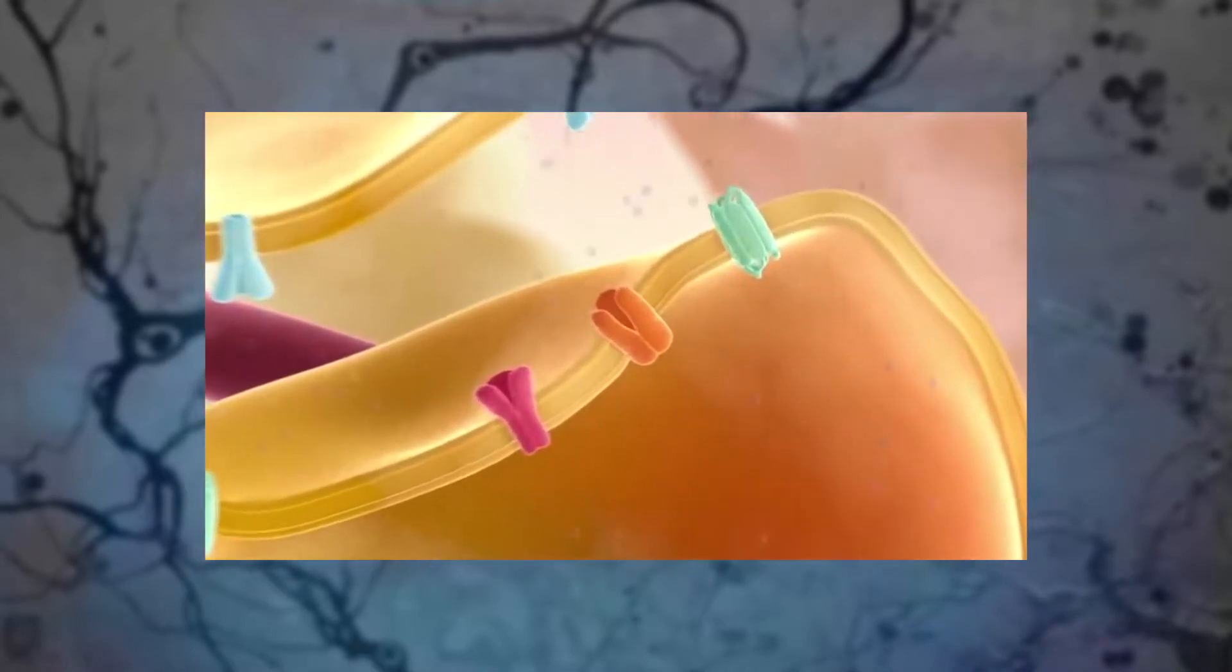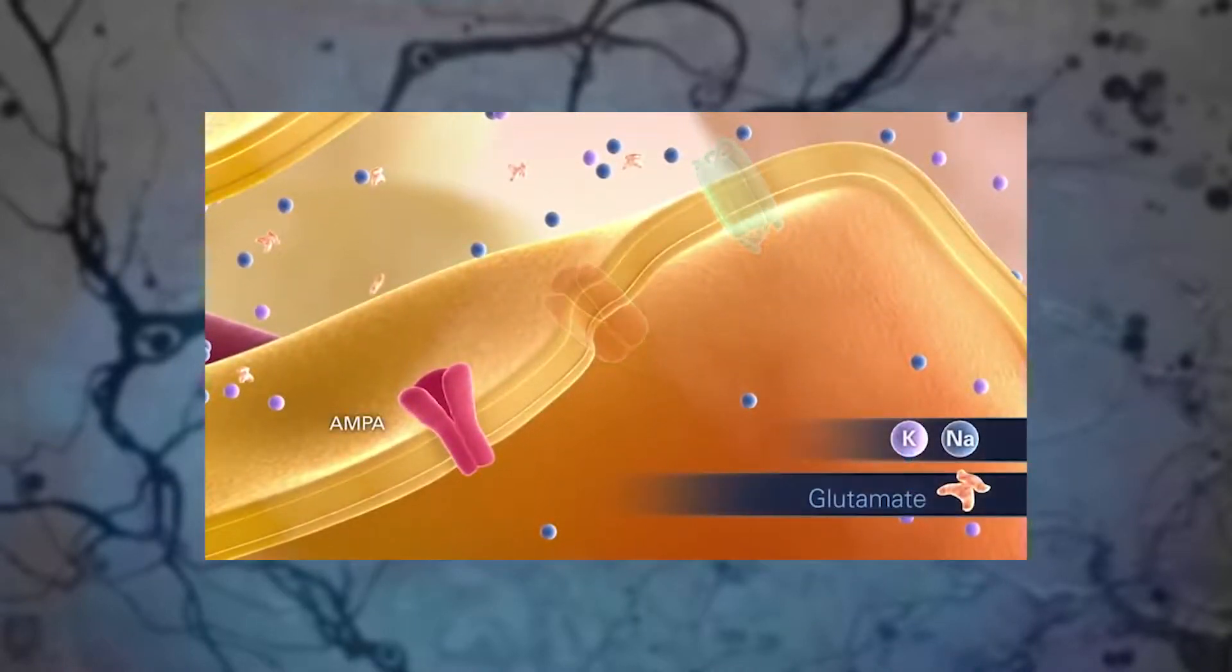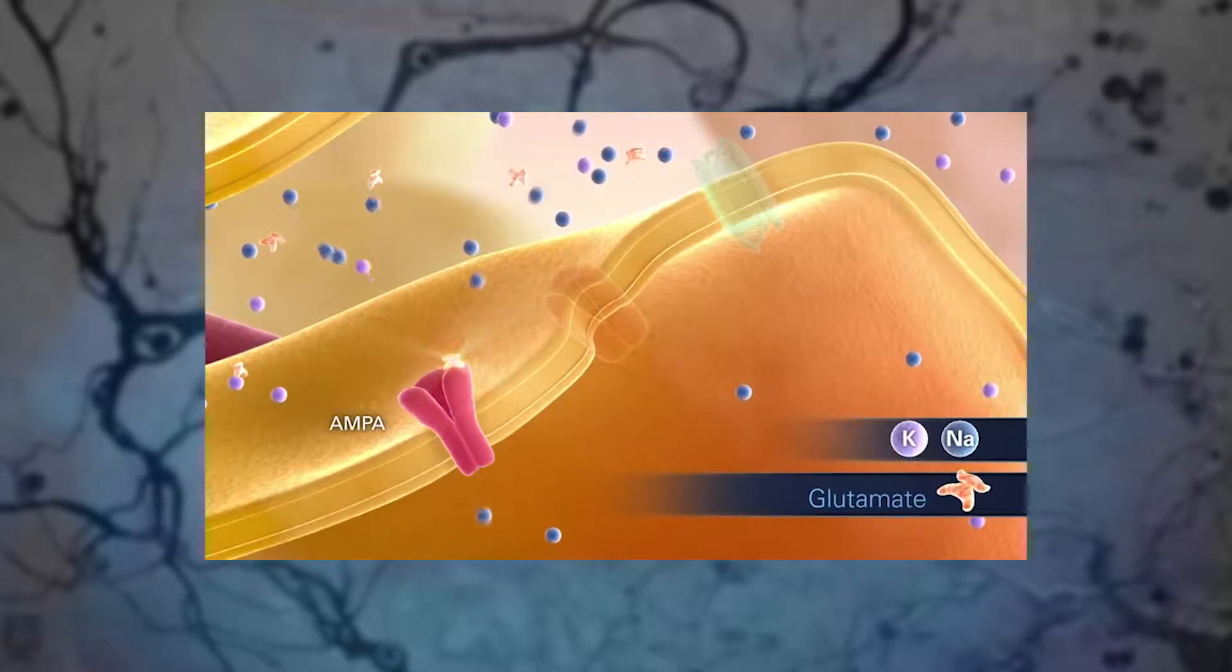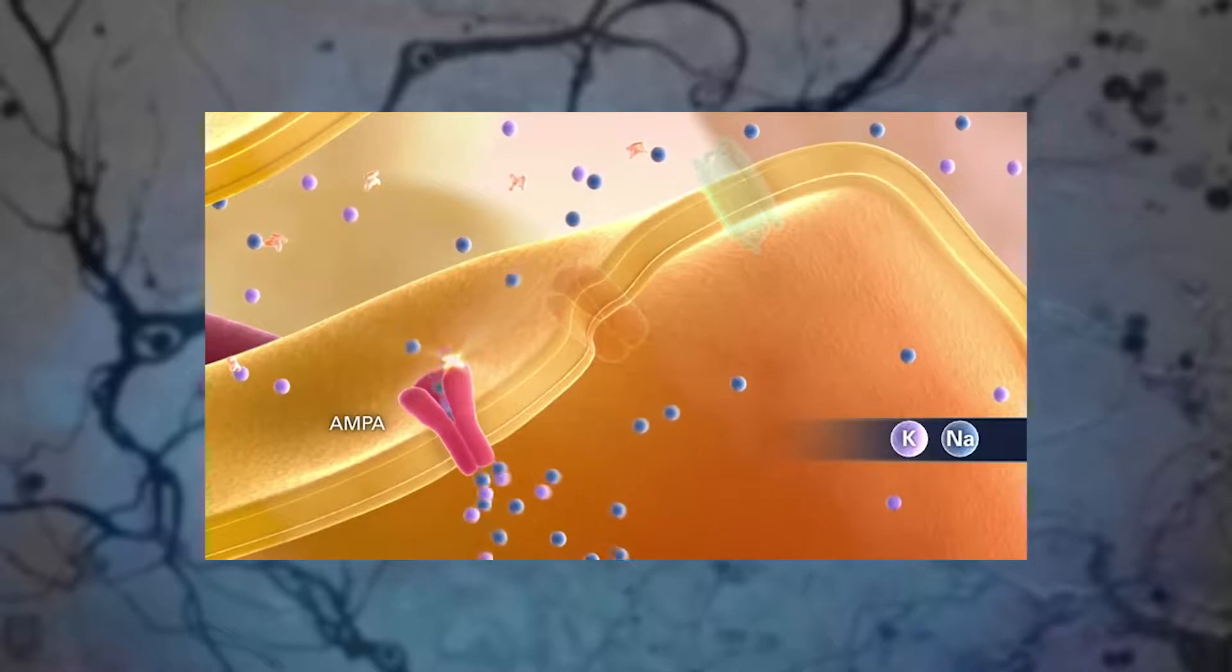There are basically two kinds of receptors. Ionotropic receptors function as tiny holes in the membrane. You can think of them as little donuts that can either be closed or open. When the neurotransmitter molecule binds to an ionotropic receptor, it typically triggers the opening up of a tiny hole through which charged atoms or ions, such as sodium, chloride, or potassium, can flow into and out of the postsynaptic neuron.